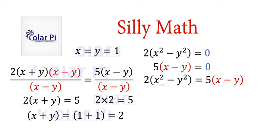So in this step where we divided by x minus y, we divided by 0. We did something that doesn't make sense, and therefore ended up with something that doesn't make sense.